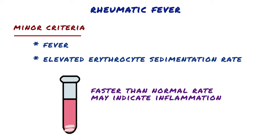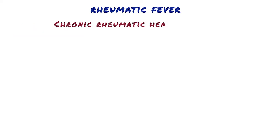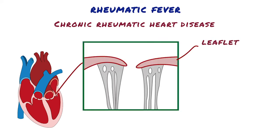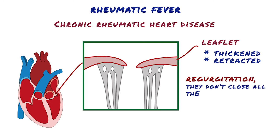The acute attack usually resolves, but may progress to chronic rheumatic heart disease. Chronic rheumatic heart disease is characterized by organization of acute inflammation and subsequent scarring. Aschoff bodies are replaced by fibrous scar, so these lesions are rarely seen in chronic disease. Most characteristically, valve cusps and leaflets become permanently thickened and retracted. Classically, the mitral valves exhibit leaflet thickening, commissural fusion, and shortening. These changes can cause complications with the valves, most commonly regurgitation, meaning that they don't close all the way.